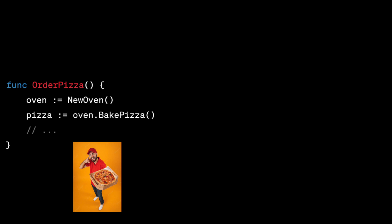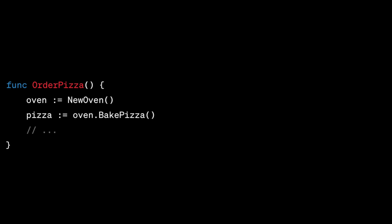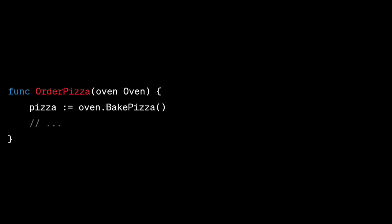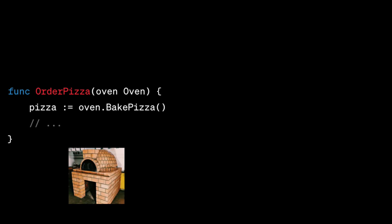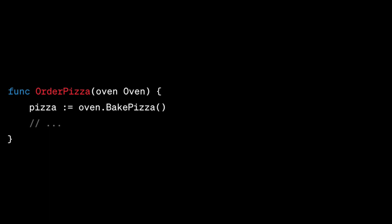Now let's look at another example. We have the same `orderPizza` function, but now it takes an oven as a parameter instead of creating one itself. We simply call `bakePizza` on the oven provided. This function is more flexible because you can choose which oven to use — a regular one, a wood-fired one, or a custom one — as long as the oven implements the `bakePizza` method.